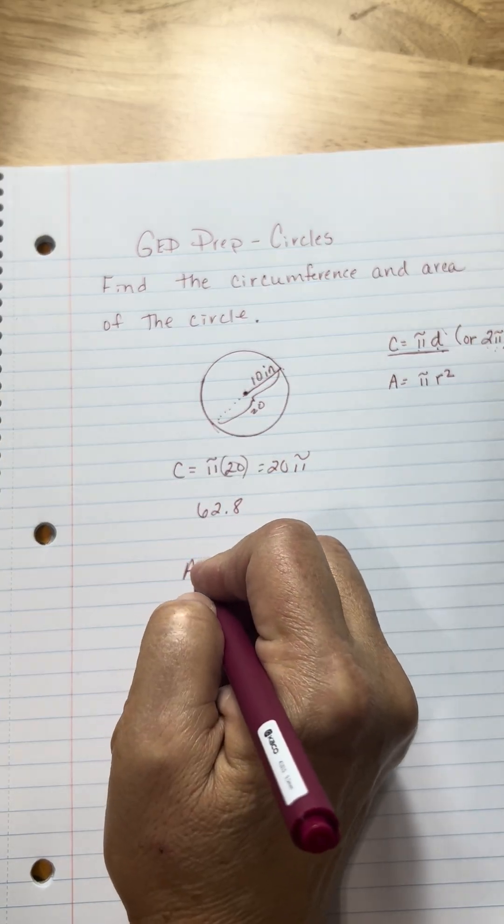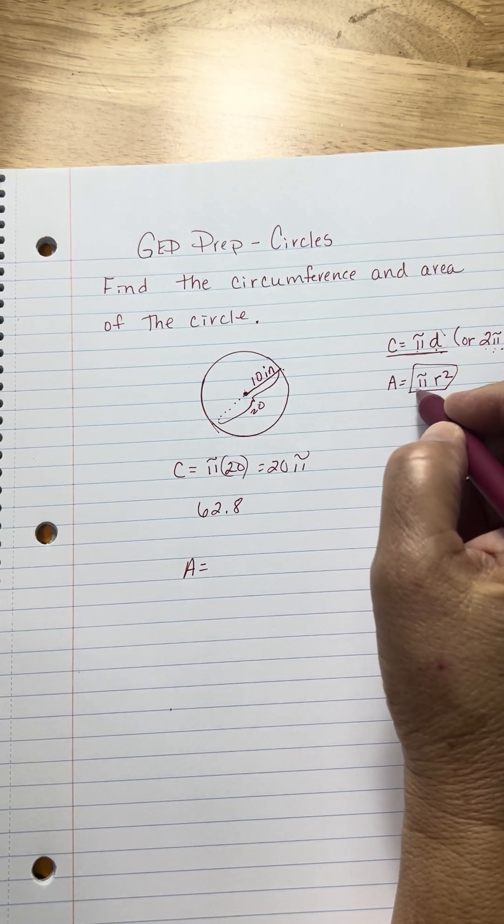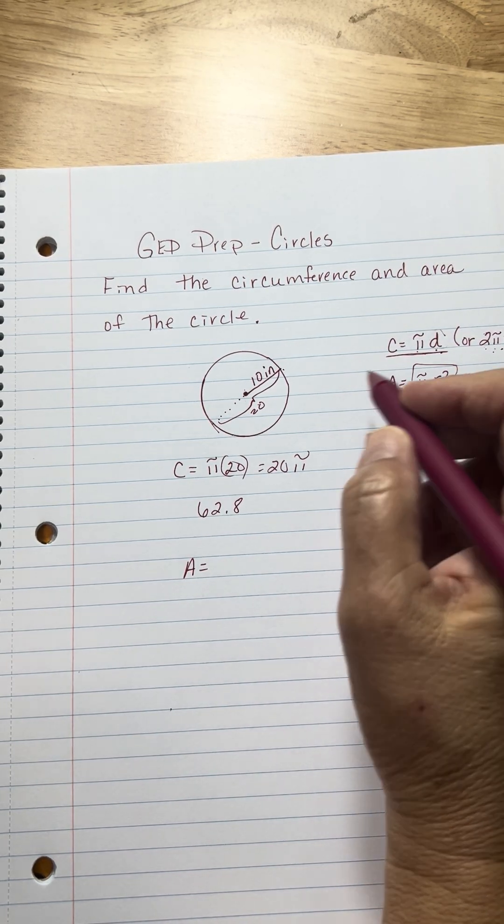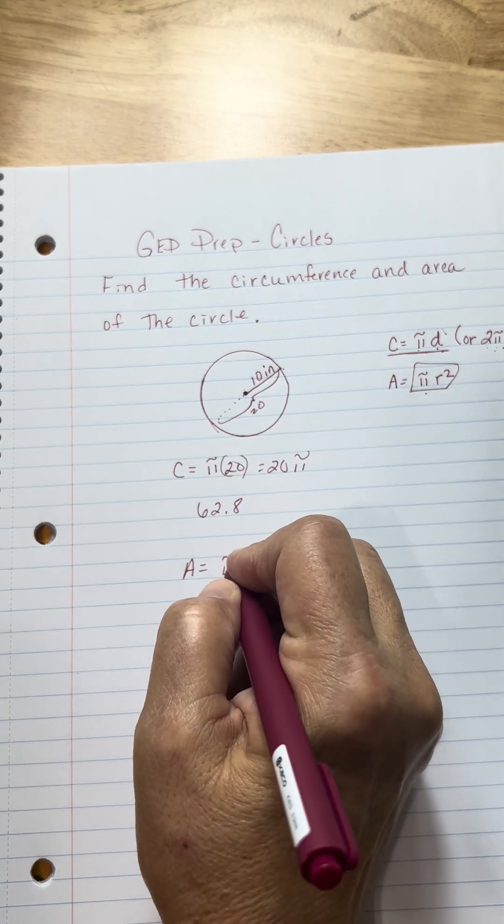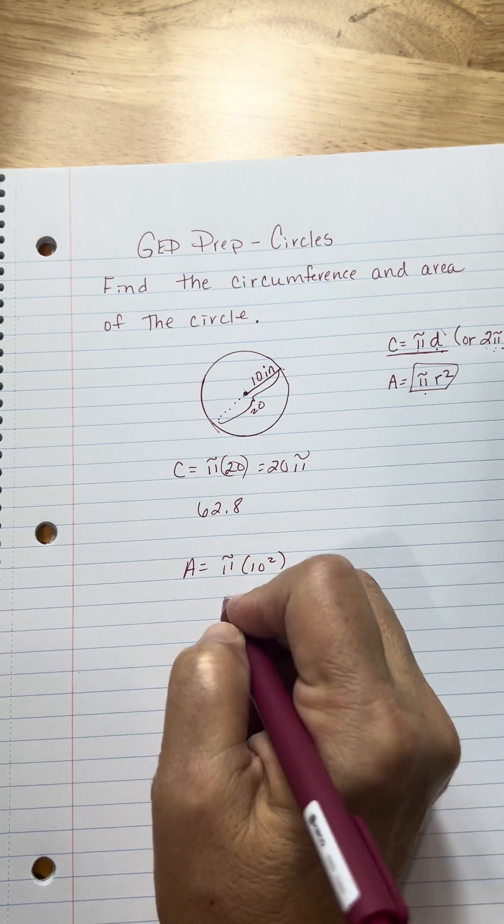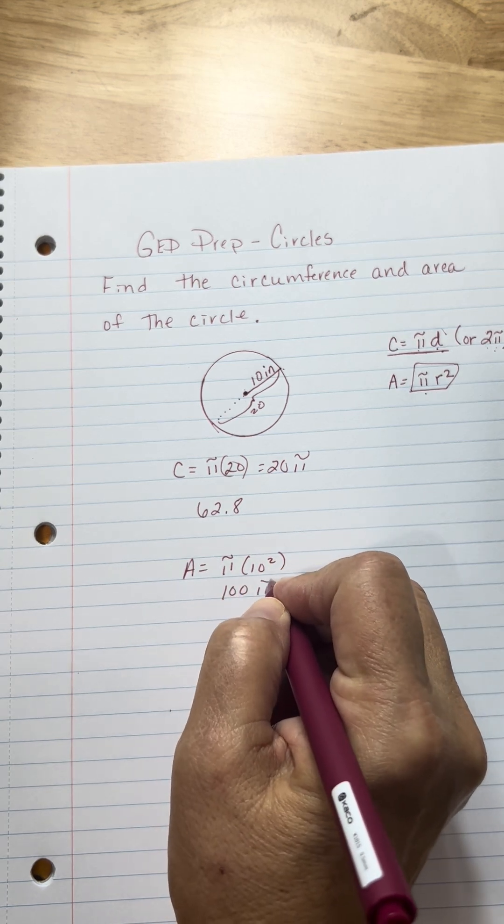Now, let's look at how to get the area. Area is pi times the radius squared. Well, the radius is halfway. So here's your 10. So that's going to be pi times 10 squared, which is 100π.